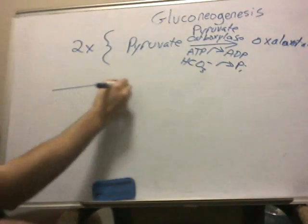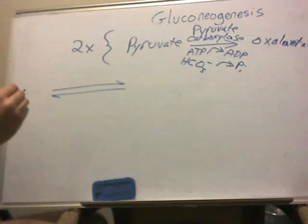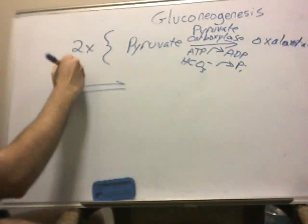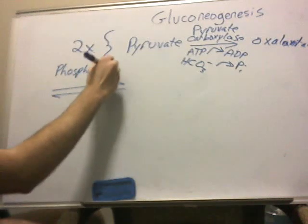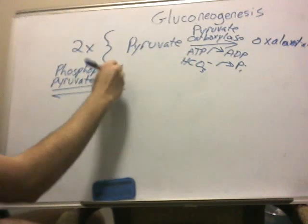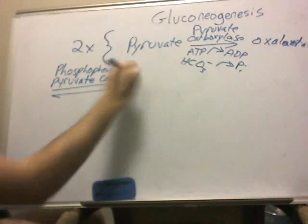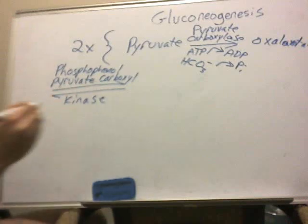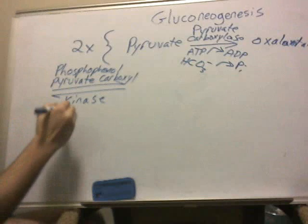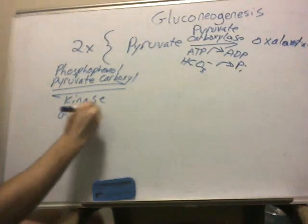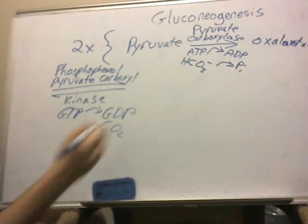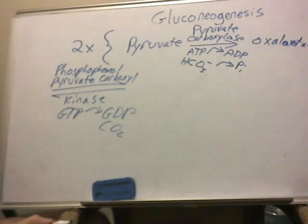Followed by that, there's a reversible reaction with phosphoenolpyruvate carboxykinase. As you would imagine, kinase is going to involve phosphate. We're actually going to use a GTP — guanosine triphosphate — going to GDP plus CO2. From there, we're going to get phosphoenolpyruvate.